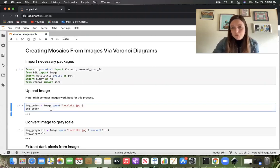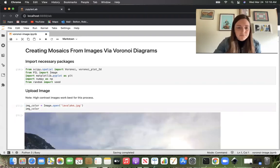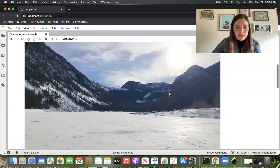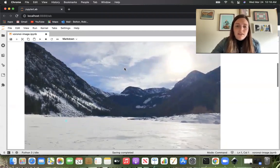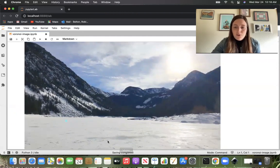And now I'm going to upload my Lava Lake image. And I will note that high contrast images work best for this process. You won't get as clearly defined a mosaic if you use an image that doesn't have high contrast. So my Lava Lake image is high contrast because the mountainous landscape, the pixels here are much darker than the pixels for the sky or the frozen lake.